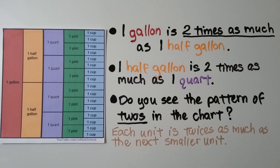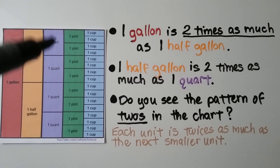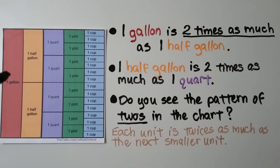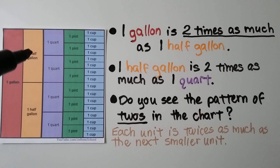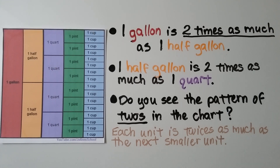We can see on this chart that one gallon is two times as much as a half gallon, and one half gallon is two times as much as one quart. Do you see the pattern of twos? Two half gallons make one gallon, two quarts make one half gallon, two pints make one quart, and two cups make one pint. Each unit is twice as much as the next smaller unit.